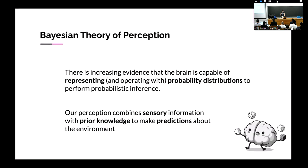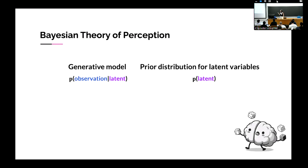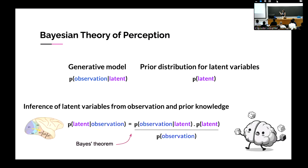This would be our goal objective. With the Bayesian theory of perception approach, there is increasing evidence that the brain is capable of representing probability distributions in an approximate way to perform probabilistic inference. Given an observation, we can infer some latent variable hidden from what we see. There exists a generative model of that observation given a latent unknown variable, and a prior distribution for those latent variables. Using Bayes theorem, we can invert the observation and prior to obtain the posterior.